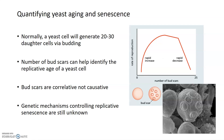Although bud scars correlate with age, there's no evidence that bud scar formation actually causes aging — it doesn't cause the rapid decline seen in older cells. It's correlative with yeast age but not causative. The genetic mechanisms that control replicative senescence, basically the decrease in the rate of reproduction seen around 20 bud scars, are still largely unknown. Bud scars correlate with yeast age but definitely don't cause senescence.